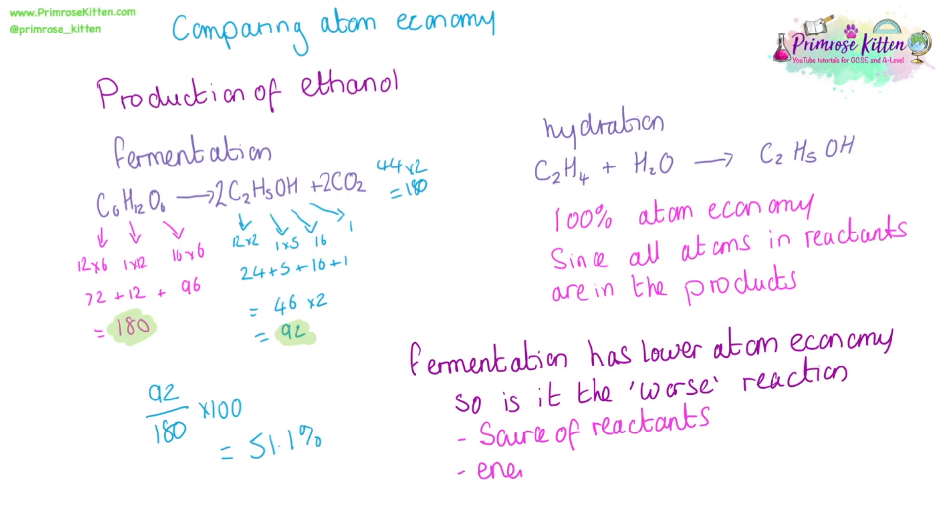So we need to look at the source of the reactants. Hydration has a better atom economy, but the source of the reactants is crude oil. That is where ethene comes from, and this is a finite resource, so it might not be very good for this. Also, hydration has a very high energy usage, whereas fermentation is a very low energy usage. It's done at a lower temperature. It's a low energy way to produce ethanol, which makes it more accessible to a range of communities.